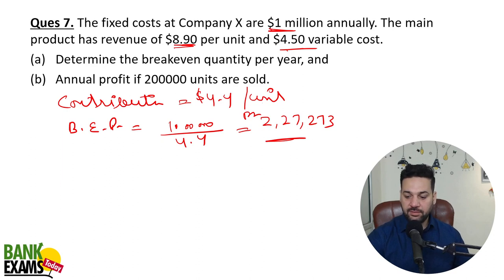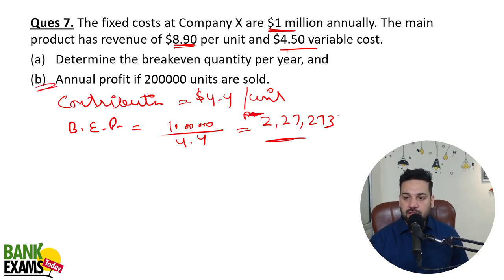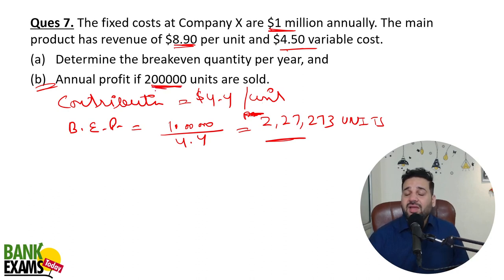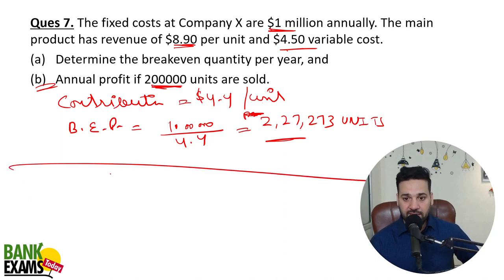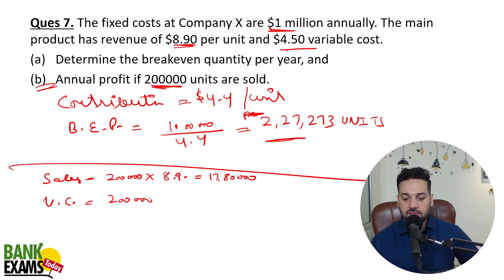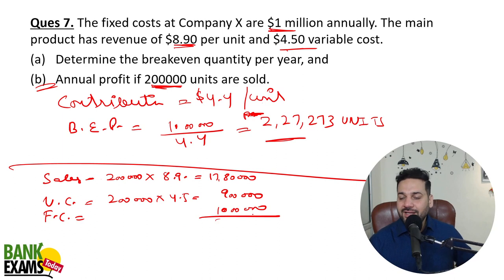The break-even point is 2,27,273 units. What is the annual profit if 2 lakh units are sold? Since the break-even point is 2,27,273, a loss will occur. Sales value is 2 lakh multiplied by 8.9 = 17 lakh 80,000. Variable cost is 2 lakh multiplied by 4.5 = 9 lakhs. Fixed cost is 10 lakhs. Total costs are 19 lakhs against revenue of 17 lakh 80,000 — so there is a loss of 1 lakh 20,000.